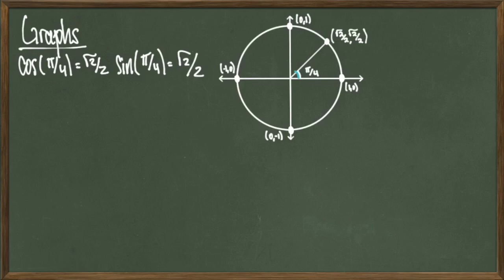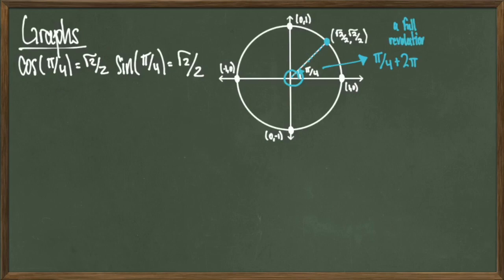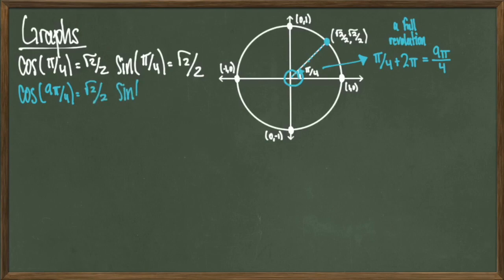But suppose we graduate from these common angles and look at a broader scope. Suppose I start at pi over 4 and then rotate around the entire circle and land at the same spot. Well, 2 pi radians is the same as 360 degrees, so if I want to do this, I can add 2 pi to pi over 4 and get a result of 9 pi over 4. The corresponding point root 2 over 2, root 2 over 2 is where I land, and evaluating sine and cosine at 9 pi over 4 still gives root 2 over 2 for both.